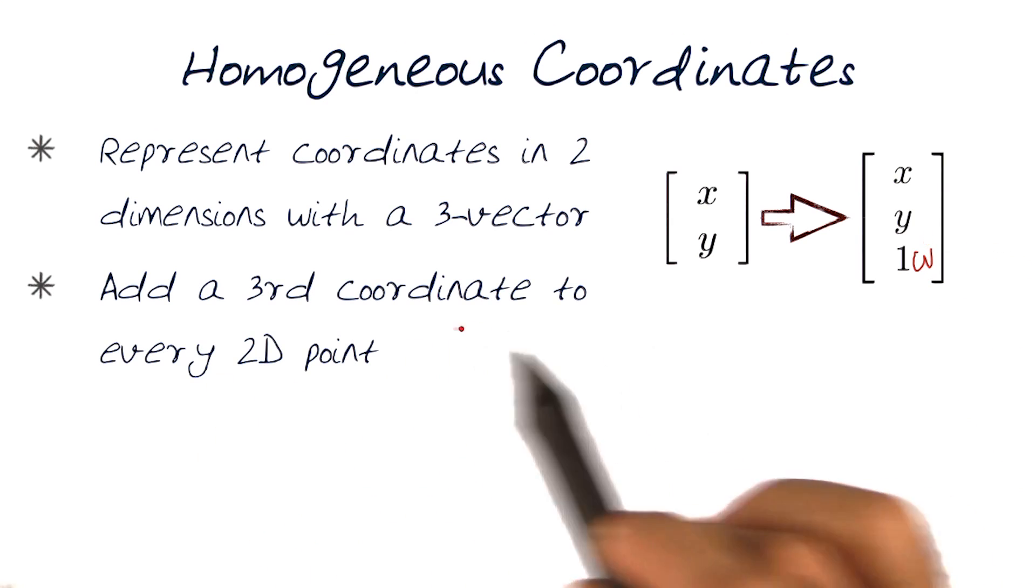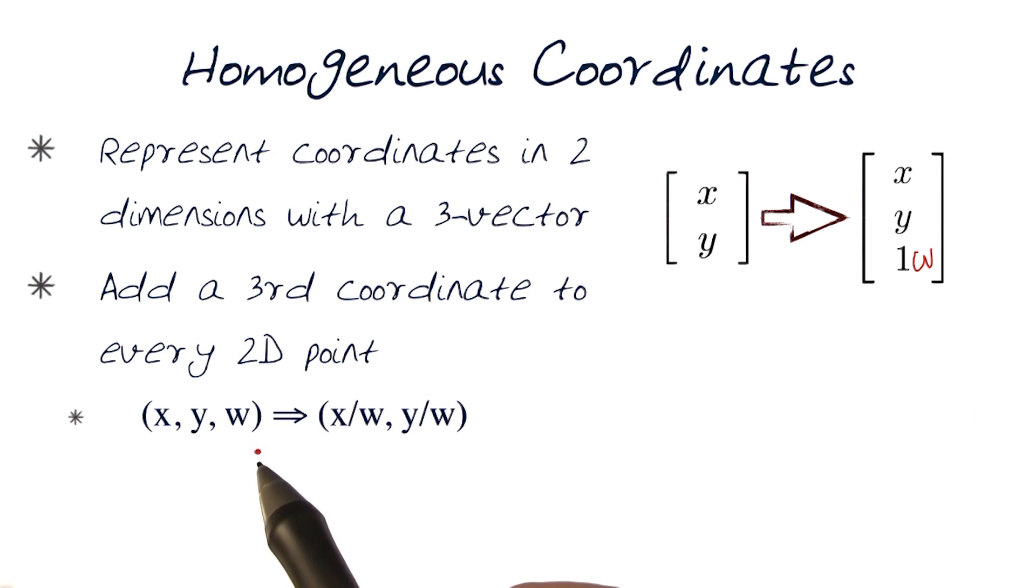What we're doing is adding a third coordinate to every two-dimensional point. So we're now coming up with x, y, w.